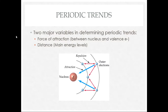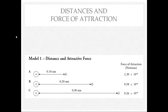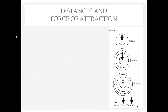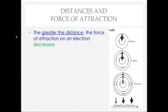In the activity last class, you looked at four models and determined the relationship between independent and dependent variables. The first two models dealt with distance and force of attraction. You found that the greater the distance an electron is from the nucleus, the force of attraction decreases — an inverse, or opposite, relationship.